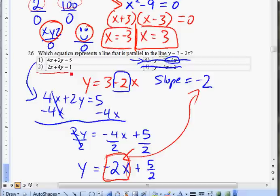Therefore this would be our answer because they have the same negative 2 as the slope. If I were to work out choice two, it's also not going to have the same slope, but choice one is the correct answer.